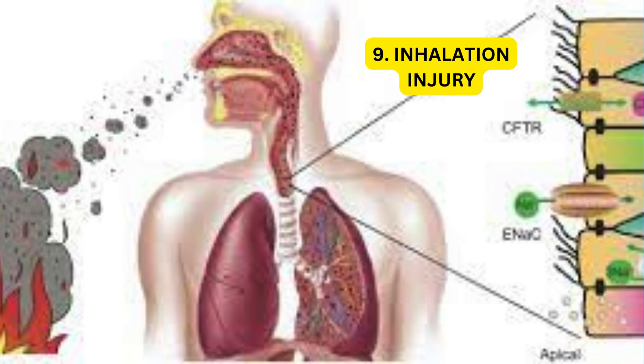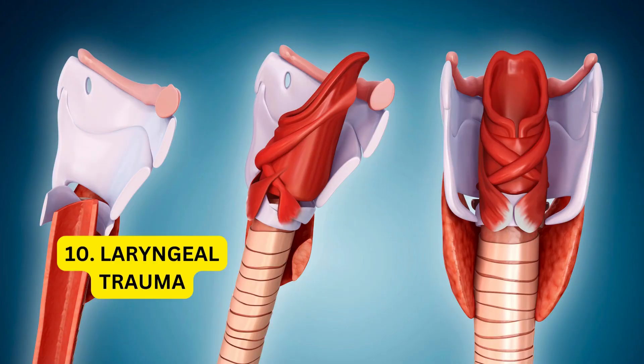Inhalation injury. Trauma cases involving fires or exposure to toxic fumes can result in inhalation injury, causing airway edema, inflammation, and obstruction. Laryngeal trauma. Direct trauma to the larynx or upper airway structures can lead to edema, hemorrhage, or obstruction, compromising breathing and requiring urgent intervention.